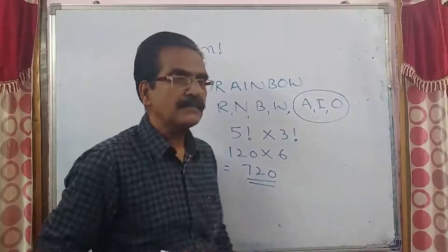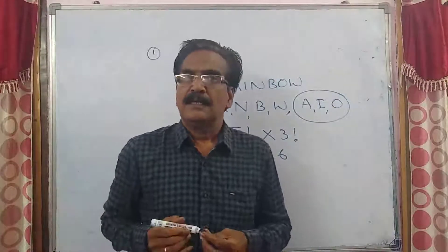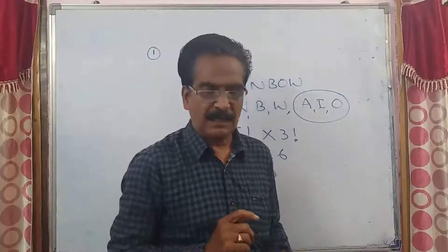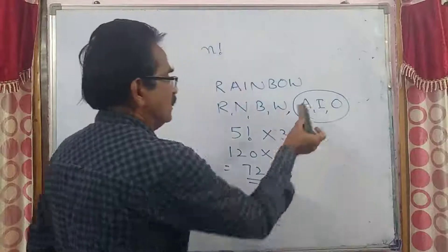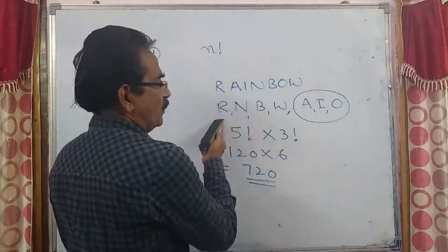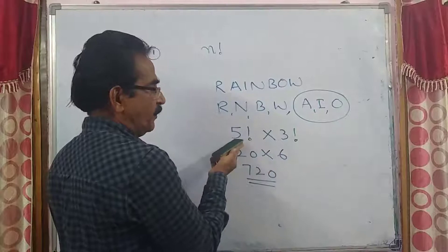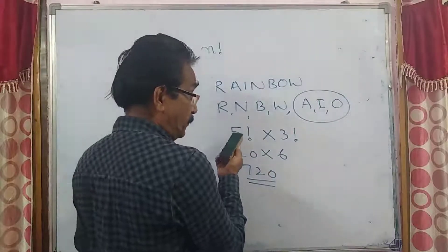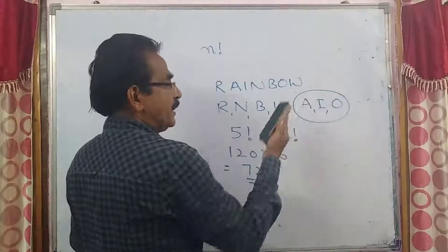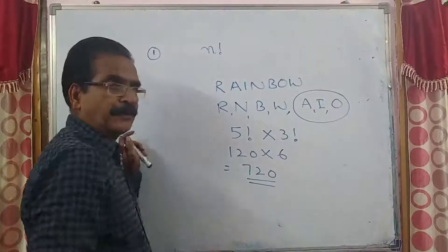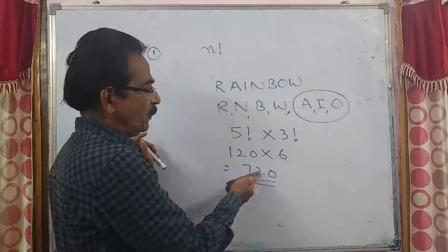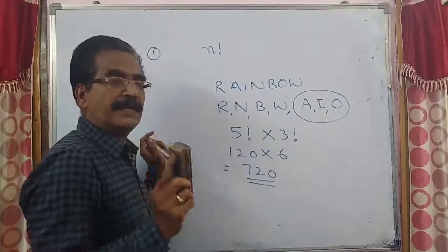So the total number of arrangements where vowels come together is 5! × 3! = 120 × 6 = 720 ways. We have taken the three vowels as one unit, four consonants, giving five units that can be permuted in five factorial ways, and the three vowels can be internally permuted in three factorial ways, giving 720 arrangements in total.